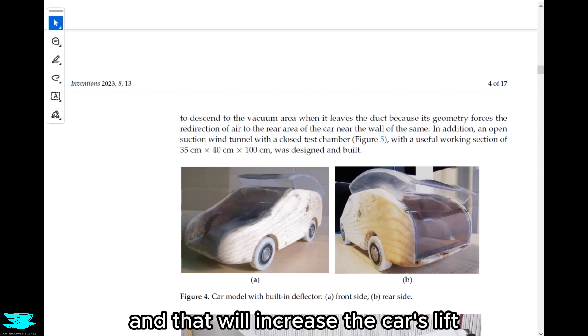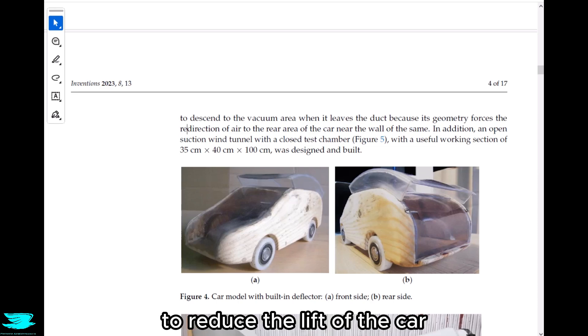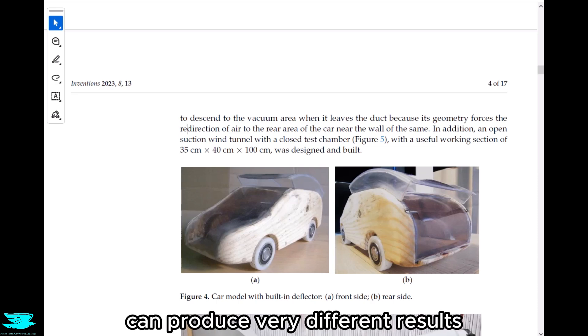But the high curvature here will drop the pressure on top and that will increase the car's lift. The design I had was much flatter, and that was to reduce the lift of the car. So you have to increase the pressure over the top of the roof. It's amazing how this general idea of using a plate on top, if you tweak it just slightly, can produce very different results.